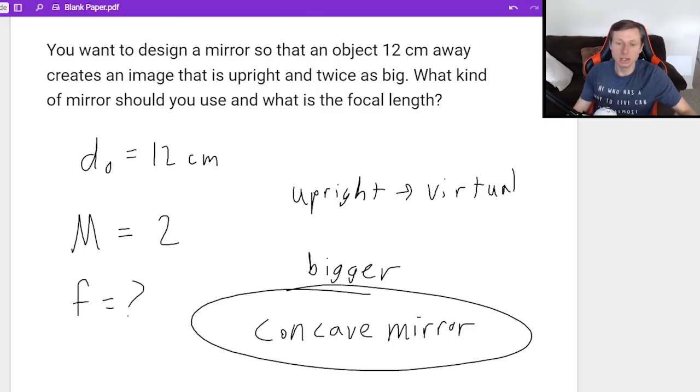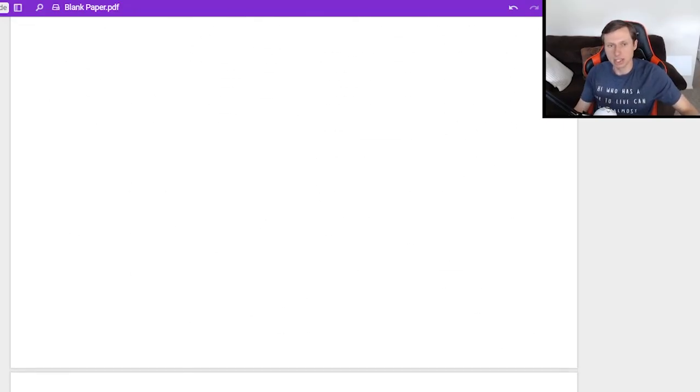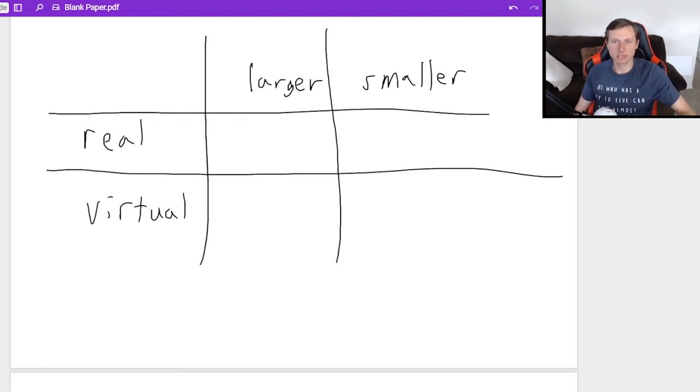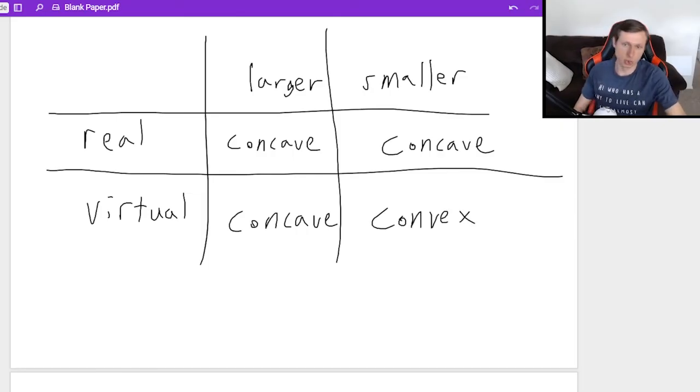And if you didn't know that, well, then you should memorize this chart right here between real and virtual images, and larger and smaller images for mirrors. Because if you want a real image, both of those are the concave case. And then virtual and larger is also a concave mirror. But if you want smaller and virtual, then that's going to be the convex case. It's the only one that gets convex is virtual and smaller.